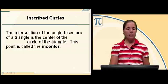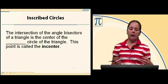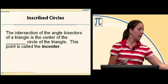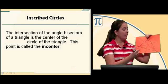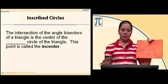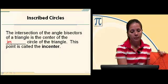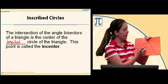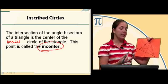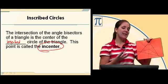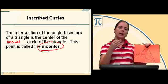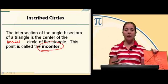The intersection of the angle bisectors of a triangle is the center of the inscribed circle. This point is called the in-center. The in-center is the point of concurrency of the three angle bisectors, and it is the center of the inscribed circle.